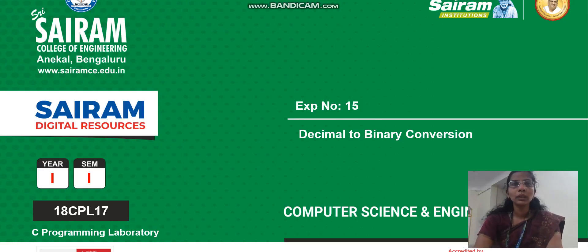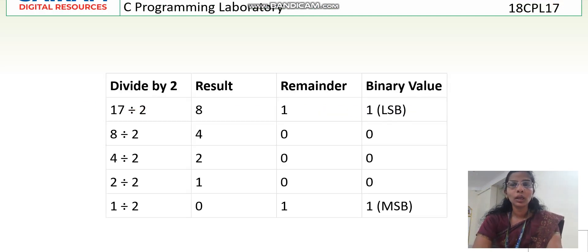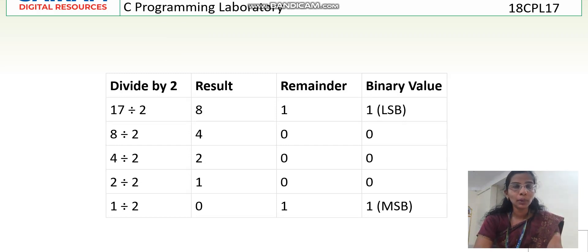Students, this is our last program in CPL lab — converting decimal number to binary. The question is to implement a recursive function for decimal to binary conversion. Decimal number is base 10 and binary number is base 2. Decimal means digits 0 to 9, binary is just 0 and 1. To convert decimal to binary, I have to divide the decimal number by 2.